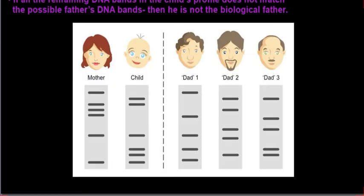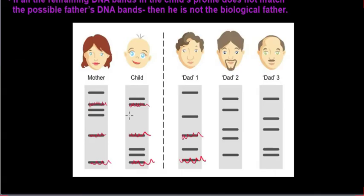Looking at an example — I'm going to do it in red so you can see what is happening. You need to cross out all of the mother's and the child's matching DNA bands. I suggest just taking a pencil and scratching them out so you know not to compare them with any of the possible fathers. Also suggest using a ruler when doing this. Everywhere the mom and the child share the same band, cross it out. Now compare the remaining DNA bands with the three possible fathers, and the one that matches the most is the possible father — in this case, dad three.